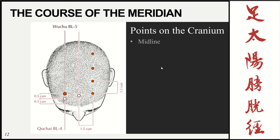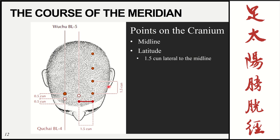To find the latitude of these points, we first locate the midline — the Du meridian — and then go 1.5 cun lateral to that. The distance between the anterior hairline angles is 9 cun. So from the midline to the end of the anterior hairline is 4.5 cun, and we take one third of that distance which is 1.5 cun. Another third would be 3 cun, and the final third would be 4.5 cun. You're going one third of the distance from the Du meridian to Stomach 8, which is at the junction of the anterior and lateral hairlines.